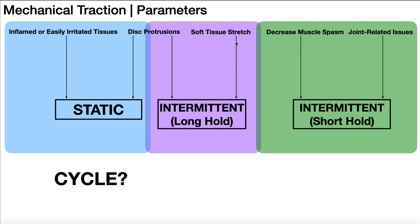Then we have soft tissue stretch — soft tissue being things like muscles, ligaments, and tendons. If somebody has a contracture in one of those structures, we want to apply a low load long duration stretch. That means we're not going to apply much force, but we're going to hold it for a long period of time. So it makes sense that if we're trying to stretch a soft tissue, we're going to apply a long hold and it's going to be intermittent.